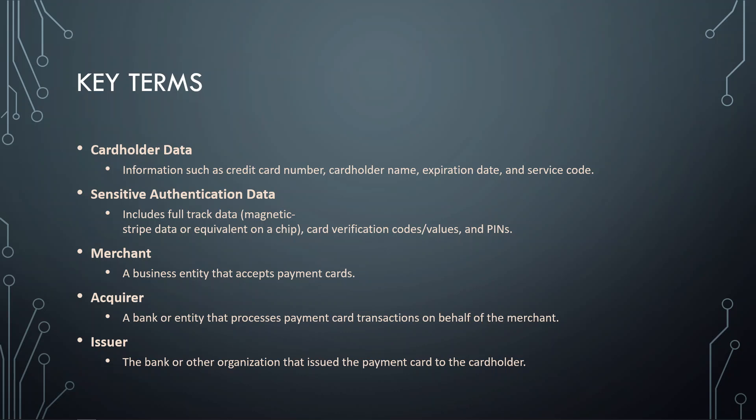An acquirer is a bank or entity that processes payment card transactions on behalf of the merchant. An issuer is the bank that issues the card to the cardholder. These are key terms used in PCI DSS.